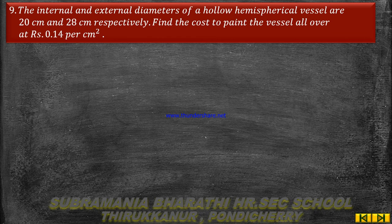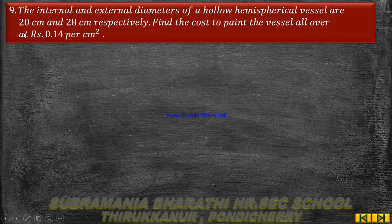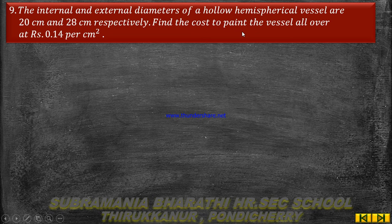For a hollow hemispherical vessel, internal radius is small r and external radius is capital R. The radius is equal to half of the diameter. So for internal diameter 20 cm, radius is 10; for external diameter 28 cm, radius is 14. Find the cost to paint the vessel all over.